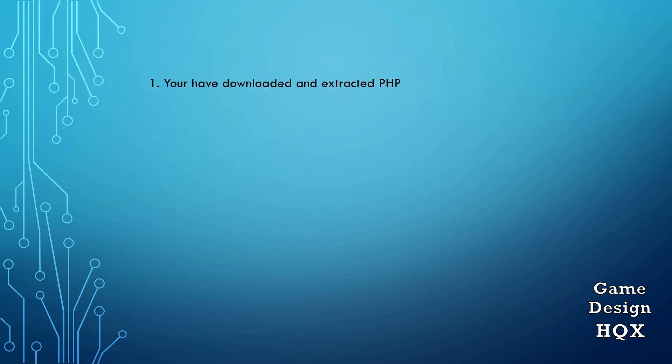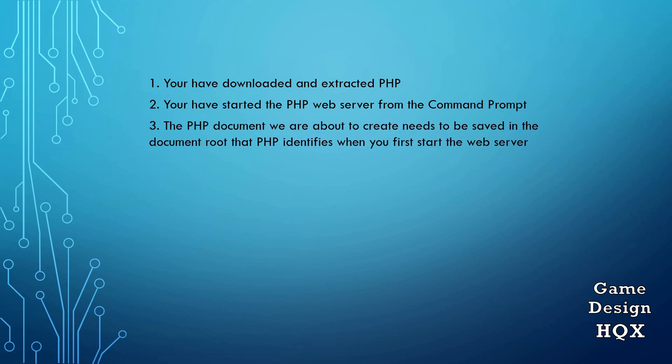So let's take a look. First, you have downloaded and extracted PHP. Second, you have started the PHP web server from the command prompt. And lastly, the PHP document that we're about to create needs to be saved in the document root that PHP identifies when you start the web server. When you open up the command prompt and type 'php -s' to start the web server, PHP will tell you right there what the document root is — that's where the PHP document needs to be saved.